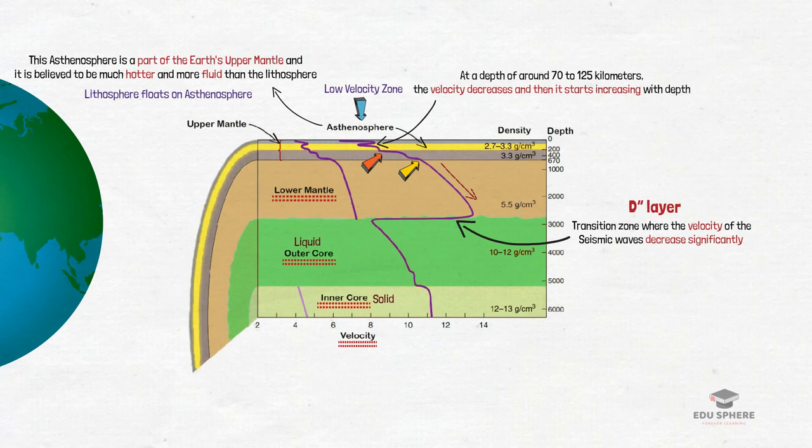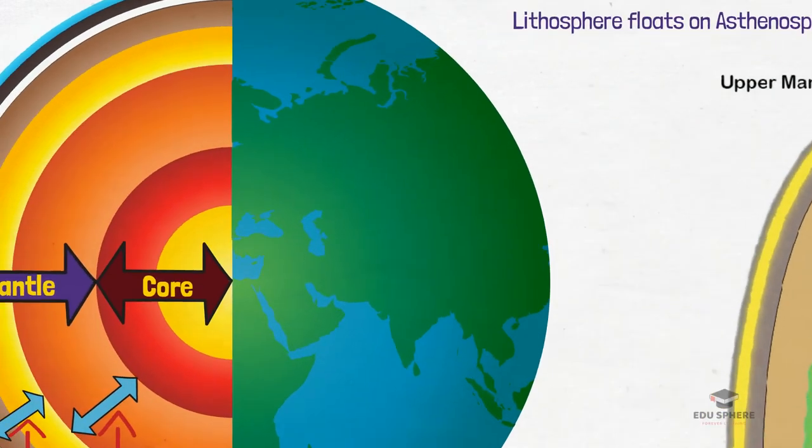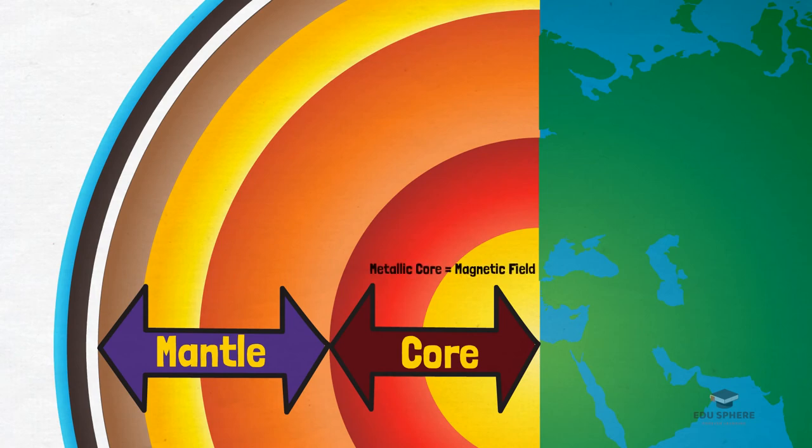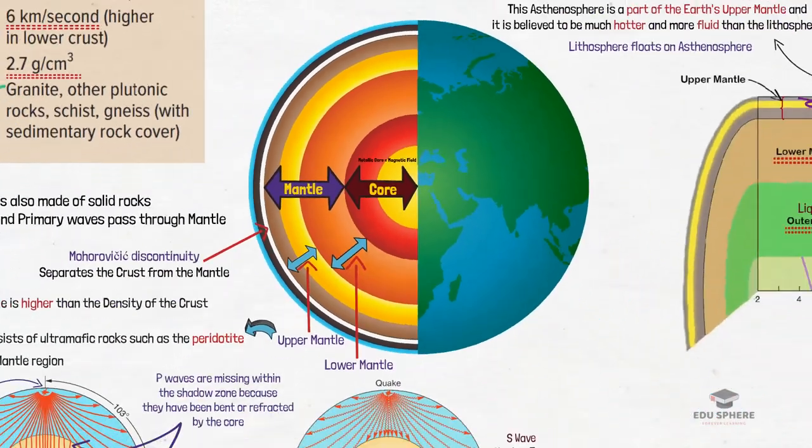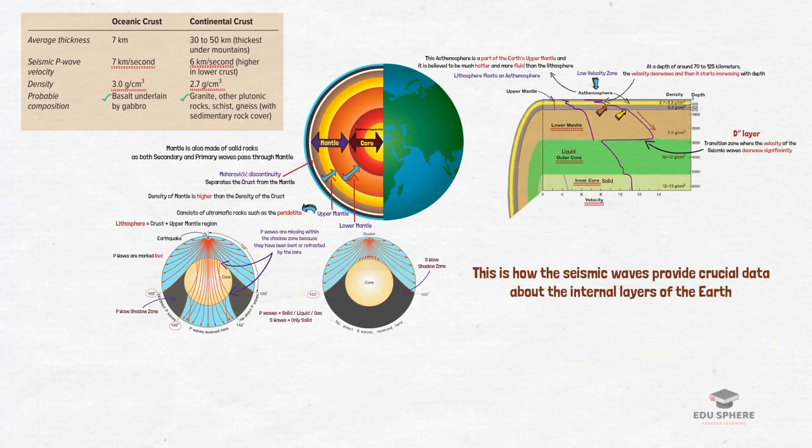The seismic and density data, together with assumptions based on meteorite composition, point to a core that contains iron and nickel, with at least the outer part being liquid. The existence of the Earth's magnetic field also suggests a metallic core. Of course, no geologist has seen the core, but since so many lines of indirect evidence point to a liquid metal outer core, most scientists accept this theory as the best conclusion that can be made about the core's composition. So, this is how the seismic waves provide crucial data about the internal layers of the Earth.